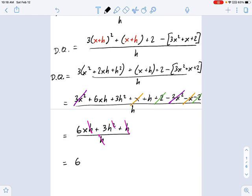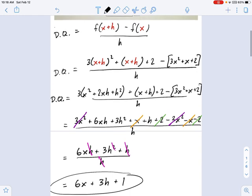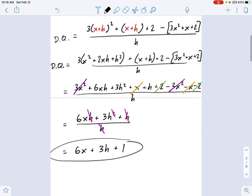The difference quotient is 6x plus 3h plus 1. Now, as you get into calculus and you learn more about the difference quotient, you'll see that there are some patterns to the answer we got. If you compare 6x plus 3h plus 1 to what we started with, this is the difference quotient.